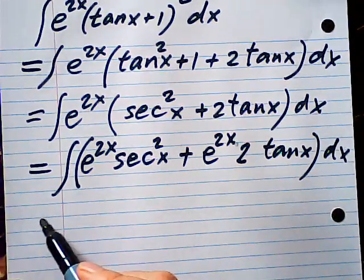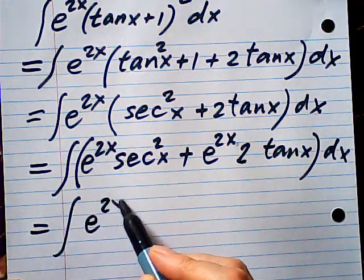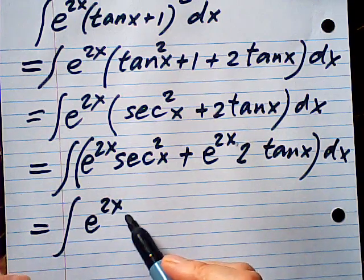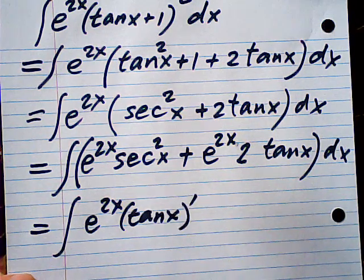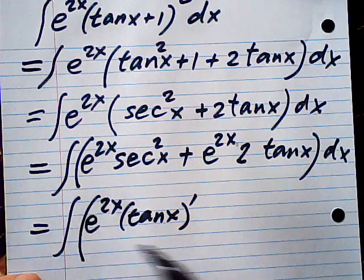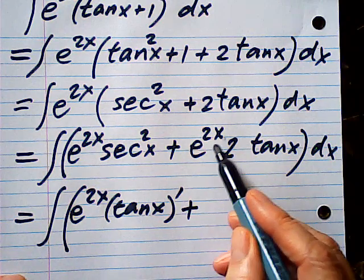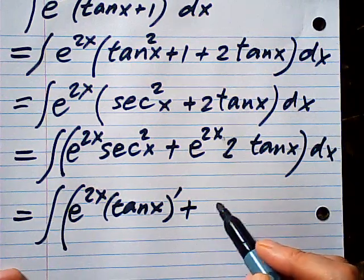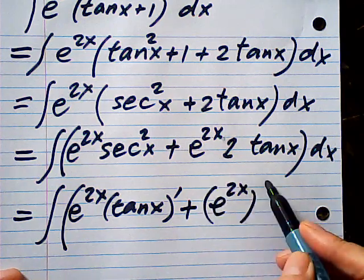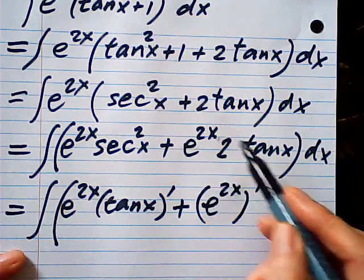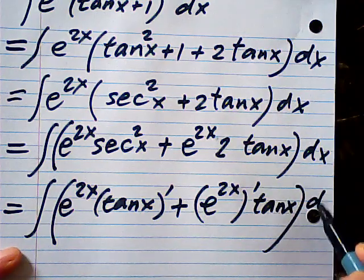Now, if you look carefully, this is the derivative of tangent, right? The derivative of tangent. And this is the derivative of e to 2x, e to the 2x derivative with the derivative of x. That is this, times tangent x dx.